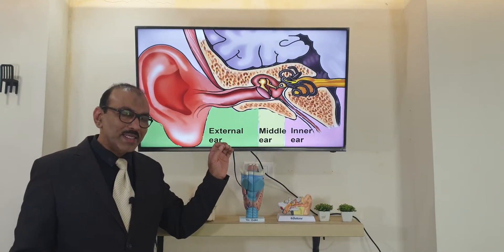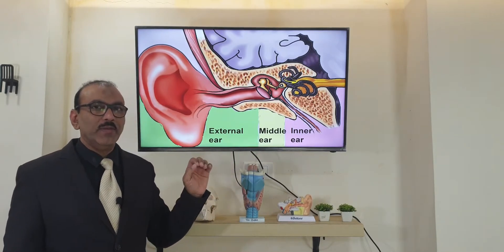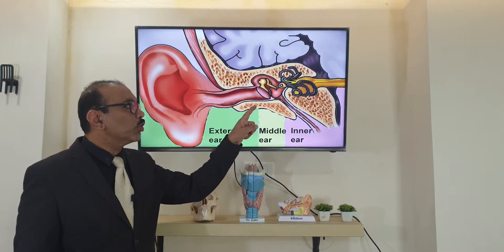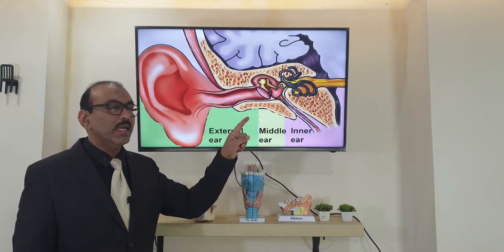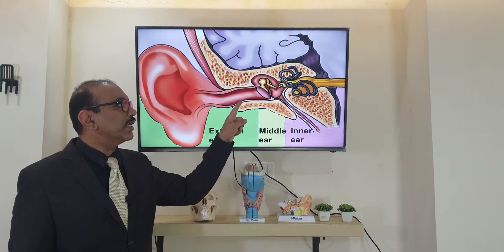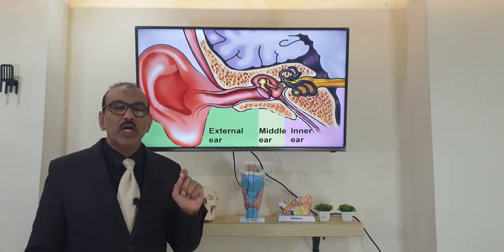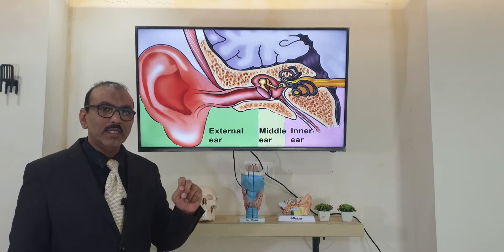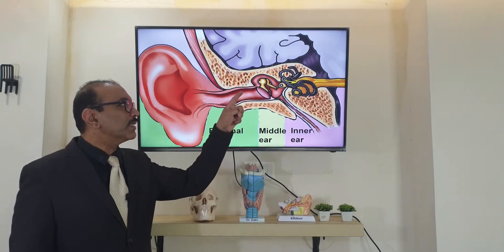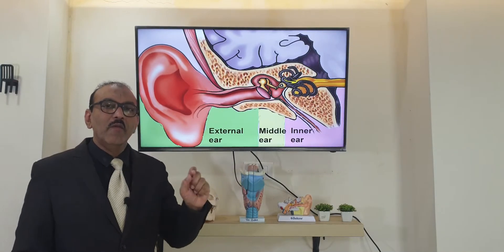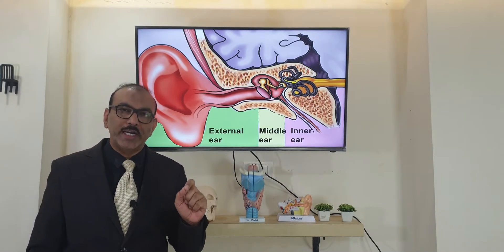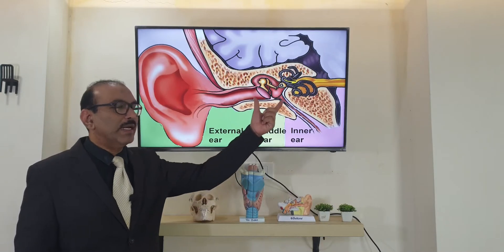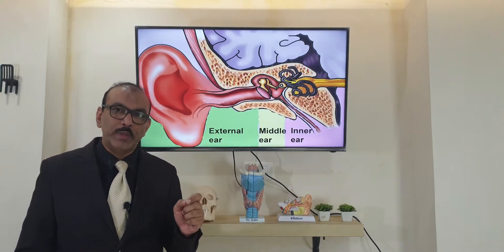What happens in this condition is that there is outgrowth of the bone. The reason being chronic irritation in the inner part — chronic irritation because of two reasons. One is maybe there is recurrent infection of the external ear, which is termed as otitis externa. The second being infection in the middle ear, that is chronic otitis media.